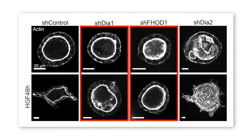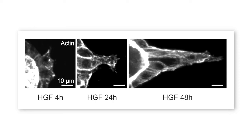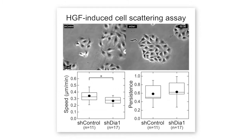The researchers knocked down several actin-nucleating formin proteins and found that both FHOD1 and DA1 were required for MDCK asini to undergo branching morphogenesis in response to the growth factor HGF, a process that begins with the extension of invasive cell protrusions into the surrounding collagen matrix. These protrusions subsequently lengthen into chains of migrating cells, but DA1, at least, isn't required for cells to migrate in the plane of the epithelial layer.